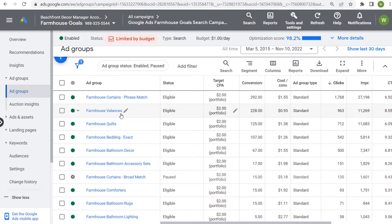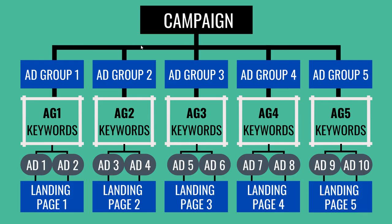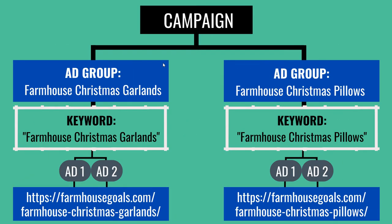Let's say I want to add new ad groups to this campaign geared around Christmas. I would create a new ad group for farmhouse Christmas garlands — targeting one phrase match keyword "farmhouse Christmas garlands," creating two responsive search ads, and sending traffic directly to the farmhouse Christmas garlands page. Both ads are geared around farmhouse Christmas garlands. The theme in each ad group needs to be very specific — not just "Christmas" but "Christmas garlands" specifically.